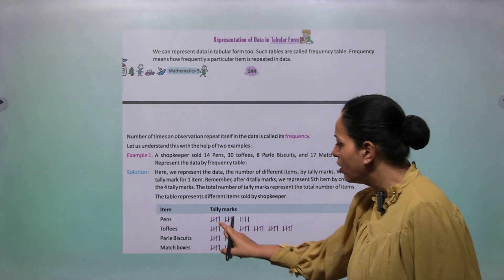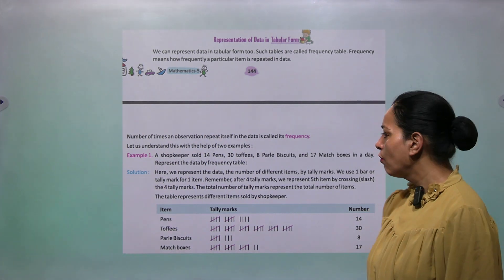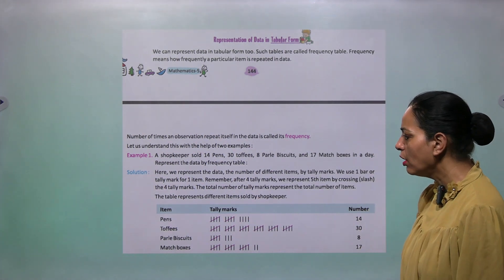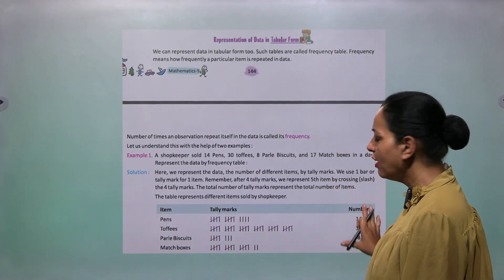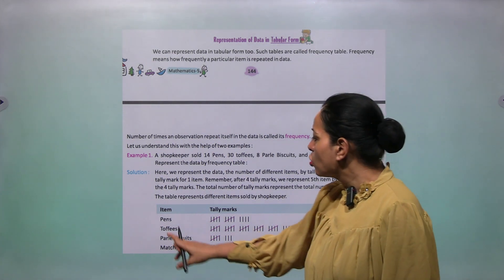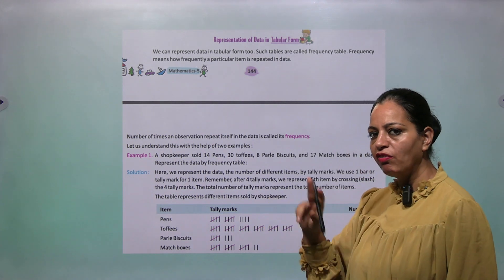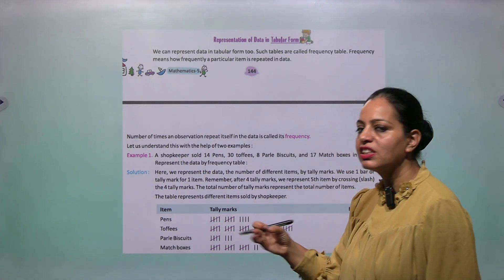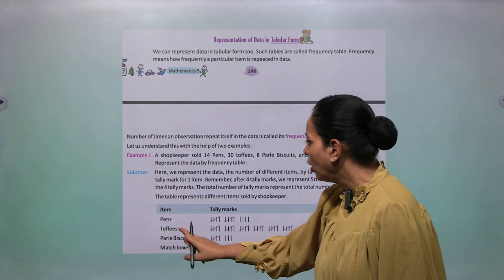The table represents different items sold by shopkeeper. First you will make the column: one is item, then tally marks, and then frequency. Item: pens. How many pens? 14 pens. So five, five, four. Usually we say that this is a bunch, so five, five, four. And toffees, how many toffees? 30 toffees. So six times this bunch.